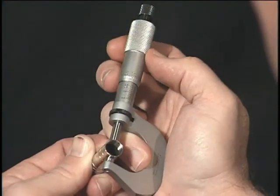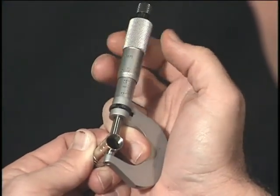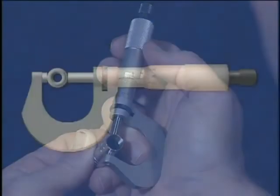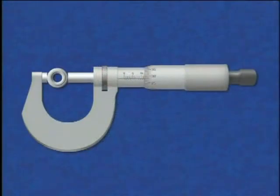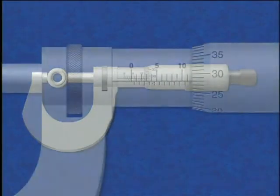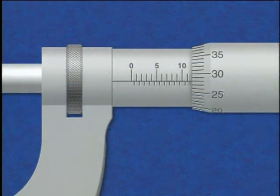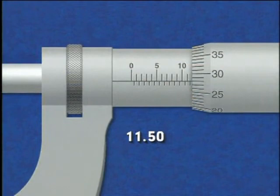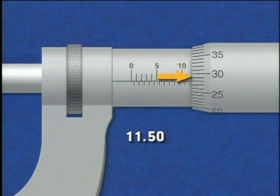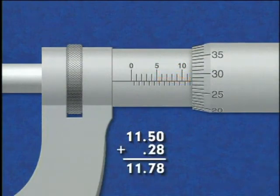The thimble is rotated and the spindle advanced until the feature is held between the anvil and the spindle face. To read this micrometer, add the number of millimeters and half millimeters visible on the sleeve to the number of hundredths of a millimeter indicated by the thimble graduation, which coincides with the reading line on the micrometer sleeve.